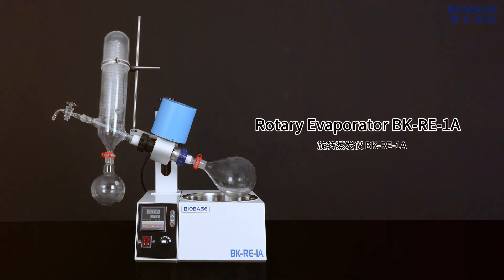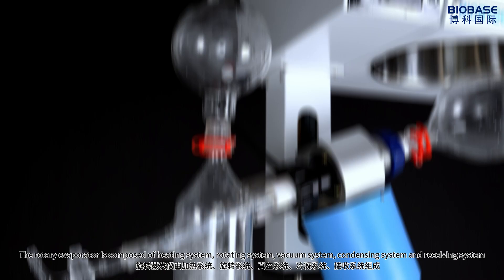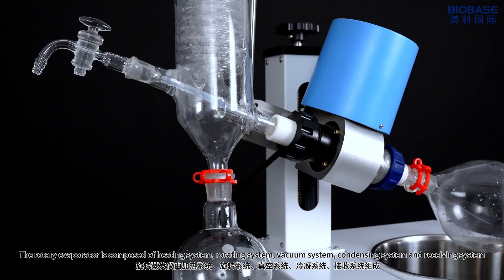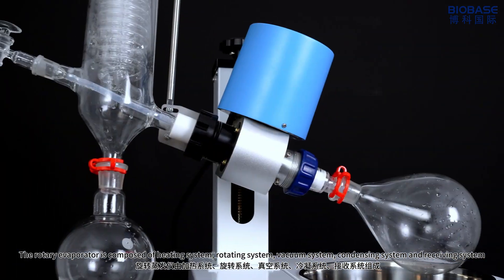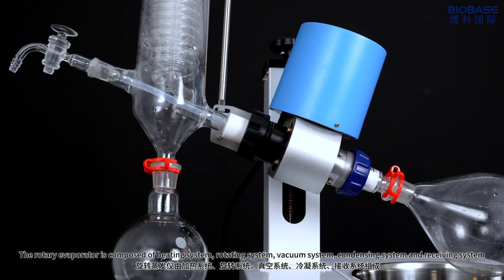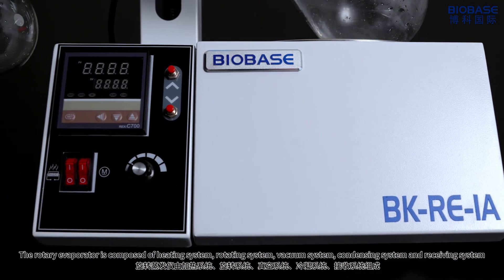Rotary Evaporator BKIE1A. The rotary evaporator is composed of heating system, rotating system, vacuum system, condensing system, and receiving system.